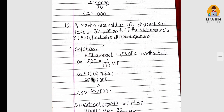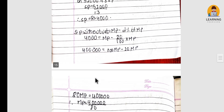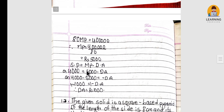A radio was sold at 20% discount and 13% VAT was levied on it. If the VAT amount is Rs 520, find the discount amount. SP without VAT = Rs 4,000, so MP = Rs 5,000. Using SP = MP − discount amount, discount amount = Rs 1,000.